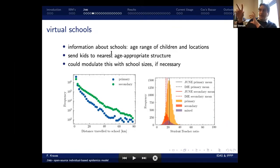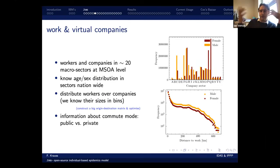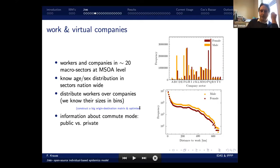Similarly, we have virtual schools in DUNE — real schools at real locations. We populate children by putting them in their closest school and compare against student-teacher ratios from the Department for Education to check we're roughly in the right place. Similarly with companies and workers: there are about 20 different macro sectors at the MSOA level. We distribute workers around companies of appropriate sizes and types, constructing a large origin-destination matrix and optimising this to get the right spread across different parts of the country.